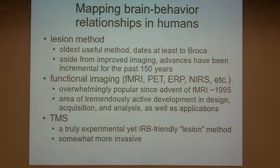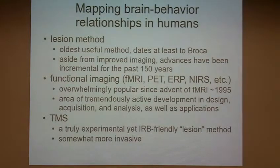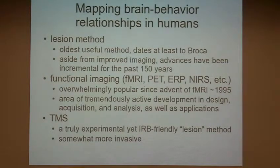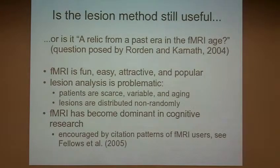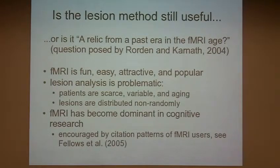Transcranial magnetic stimulation works by putting a big coil on somebody's head and electrically interfering with what's going on in the underlying cortex. TMS is basically the only experimental option in humans that's wildly popular. So the question — raised explicitly in an article by Rorden and Karnath in 2004 — is: is the lesion method still useful, or is it a relic from a past era in the fMRI age?